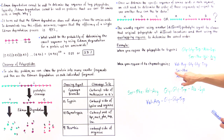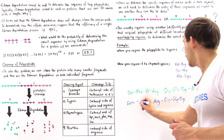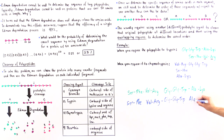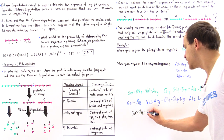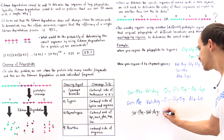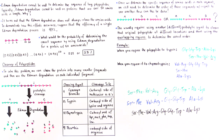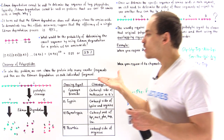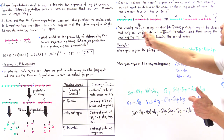Serine and phenylalanine go at the beginning, and alanine-lysine goes at the end. So the final assembled sequence is: serine, phenylalanine, valine, arginine, glycine, glycine, tryptophan, alanine, lysine. This is exactly what we mean by using overlapping regions after exposing our polypeptide to not just one proteolytic enzyme, but several, to determine the correct order of our segments.